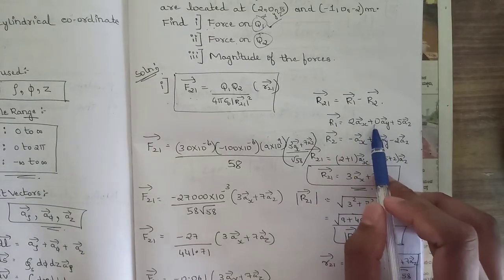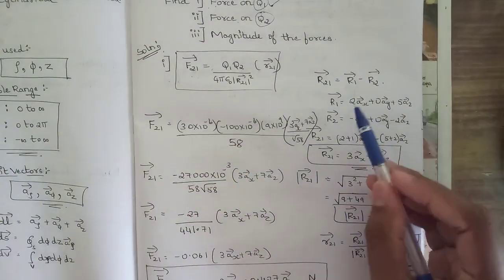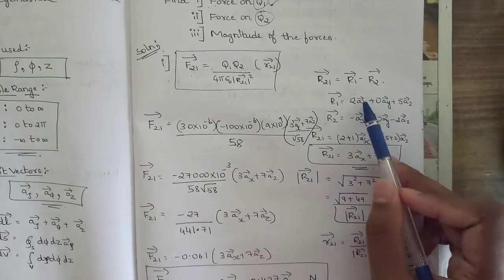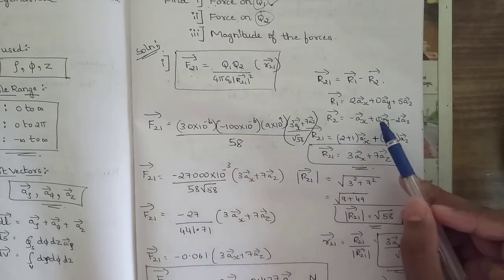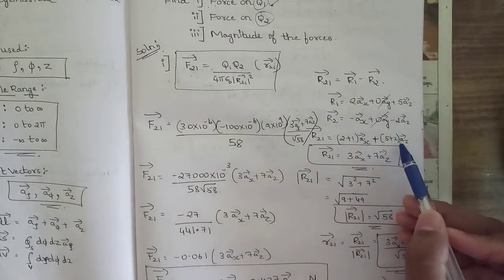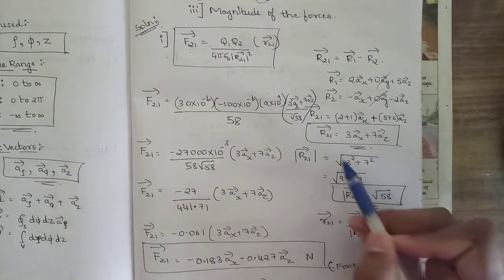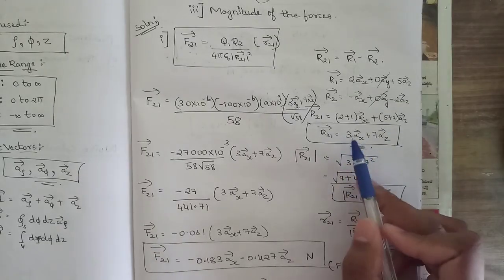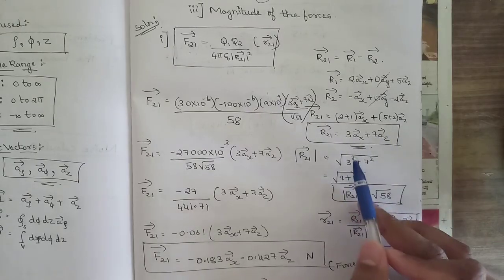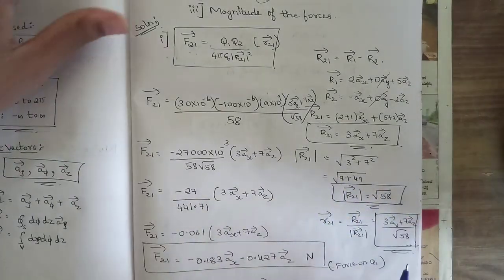r1 = 2ax + 0ay + 5az and r2 = minus ax + 0ay minus 2az. Computing r21 = r1 minus r2: the x-component is 2 minus (minus 1) = 3, the y-component cancels to 0, and the z-component is 5 minus (minus 2) = 7. So r21 = 3ax + 7az. The magnitude |r21| = √(3² + 7²) = √(9 + 49) = √58.